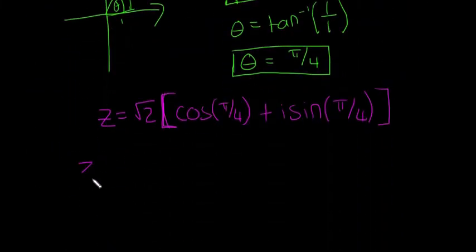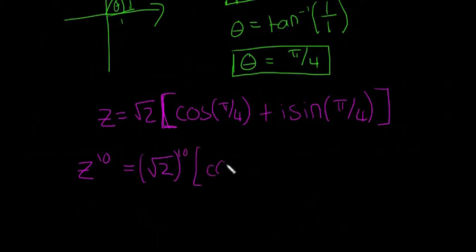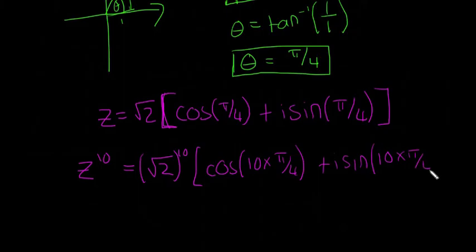So we're looking for z to the power of 10, so that's going to be equal to the square root of 2 to the power of 10 multiplied by cos of 10 multiplied by pi over 4, plus i sine 10 multiplied by pi over 4.